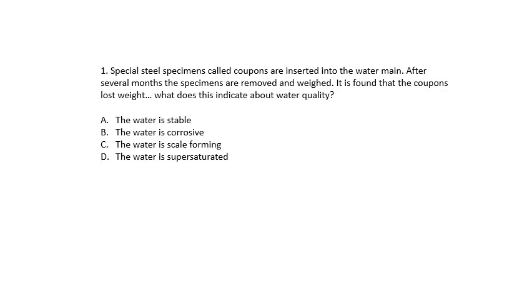Question number 1. Special steel specimens, called coupons, are inserted into the water main. After several months the specimens are removed and weighed. It is found that the coupons lost weight. What does this indicate about water quality? That the water is stable, corrosive, scale forming, or super saturated. The answer is the water is corrosive. The coupon lost weight means it got corroded. If it's stable, the weight does not change, and if it's scale forming, it will gain weight.